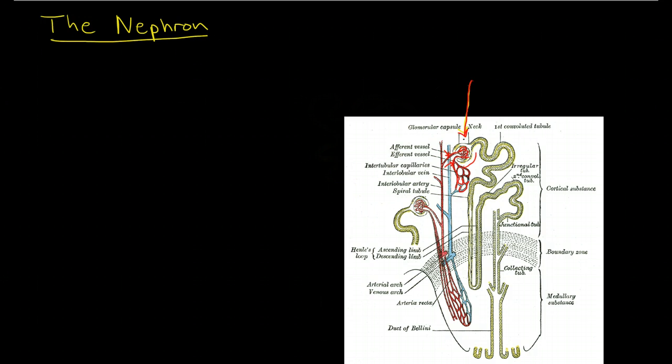And this picture doesn't show it, but this capillary bed is actually intertwined around the rest of the nephron, the tubules, the loop of Henle, and the collecting ducts. Now, interestingly enough here, in this picture, it shows two different nephrons. This one here at the top is a cortical nephron.